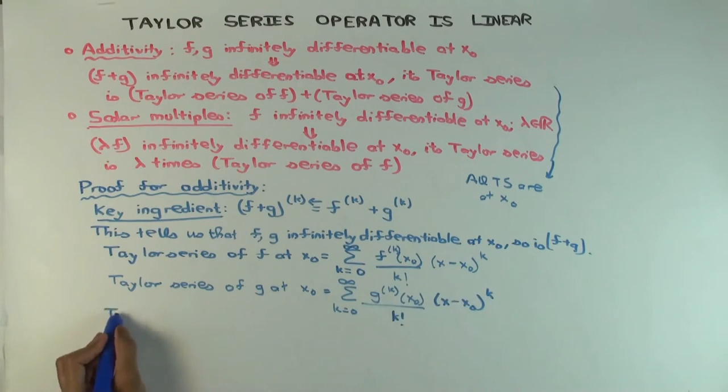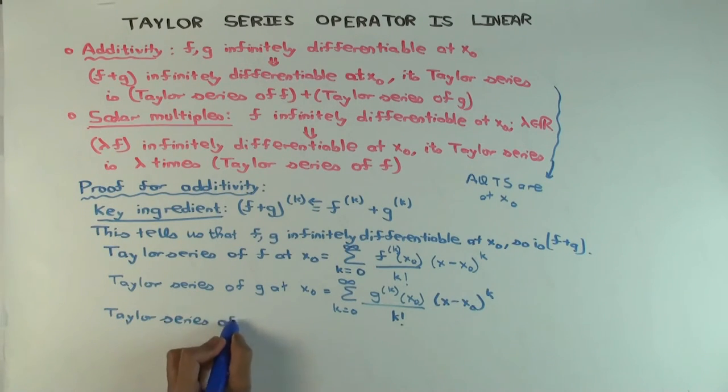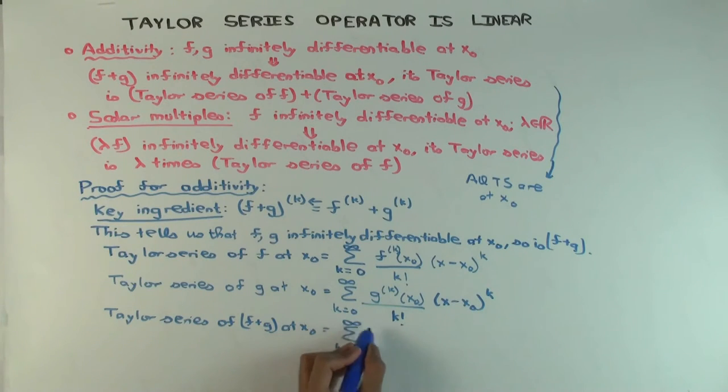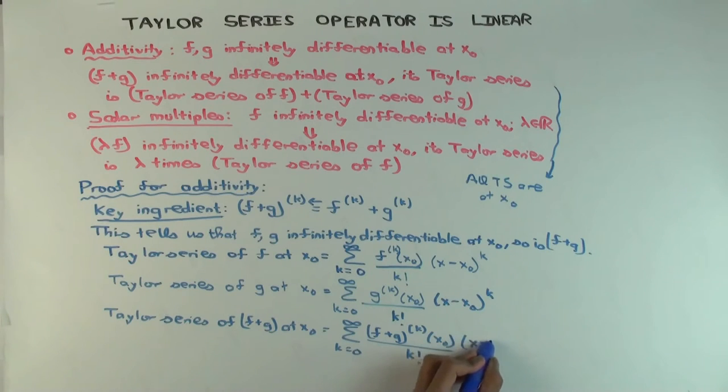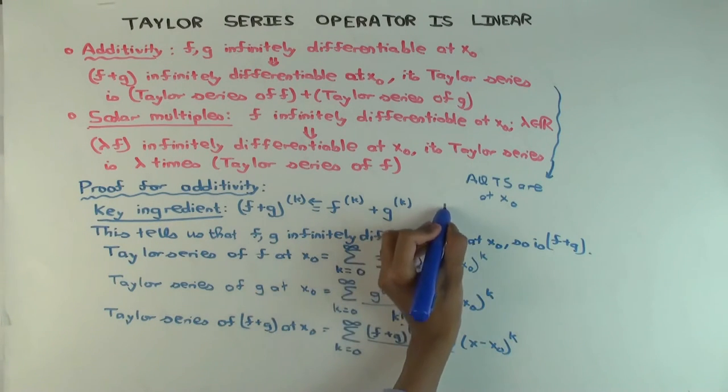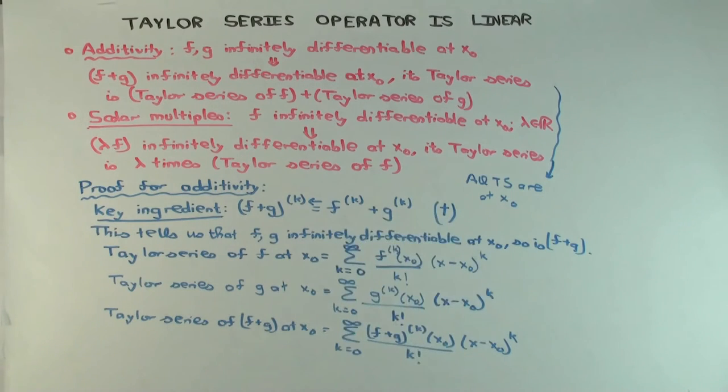And what is the Taylor series of f plus g at x0? And then we have to check whether when you add these two you get that, right? But let's just write down what it will be. Well, you just replace f by f plus g. So what will you get? You'll get summation k equals 0 to infinity, (f + g)^(k)(x0) over k factorial times (x minus x0) to the k. Okay, good. Let's call this dagger.